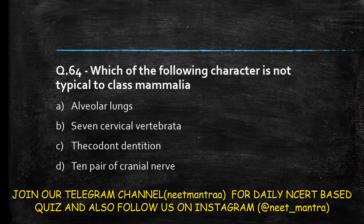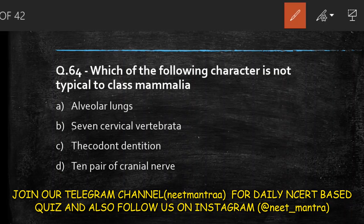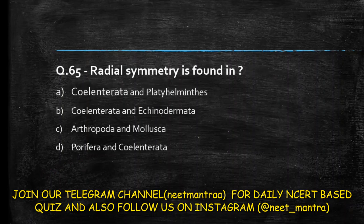Next question: which of the following characters is not typical of class Mammalia? Options are alveolar lungs, seven cervical vertebrae, thecodont dentition, or ten pairs of cranial nerves. In mammals, there are typically twelve pairs of cranial nerves, not ten. So the answer is option D.